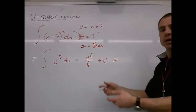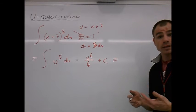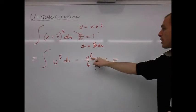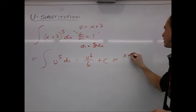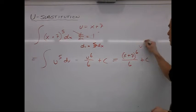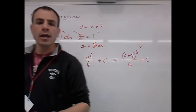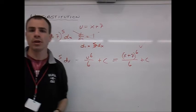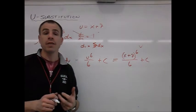u is x plus 7, so we're going to sub x plus 7 back in for u, and now we are done. x plus 7 to the 6th over 6 plus c, that's our antiderivative. That's our answer.